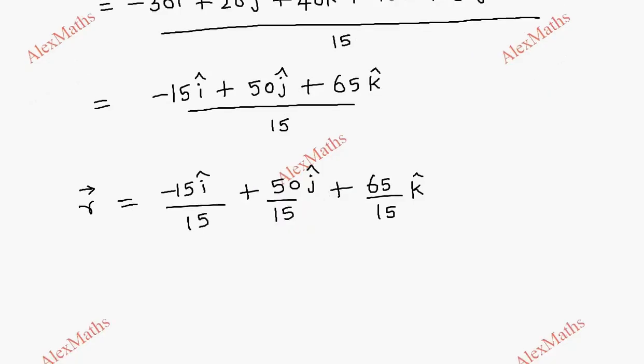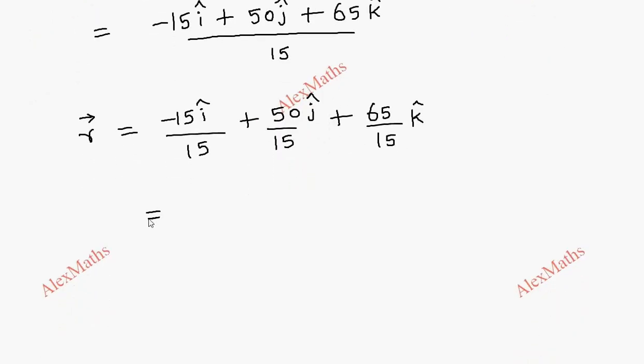So total, first term is minus i cap. After simplification, we have 10 by 3 j cap, and 13 by 3 k cap. So r vector equals this position in meters.